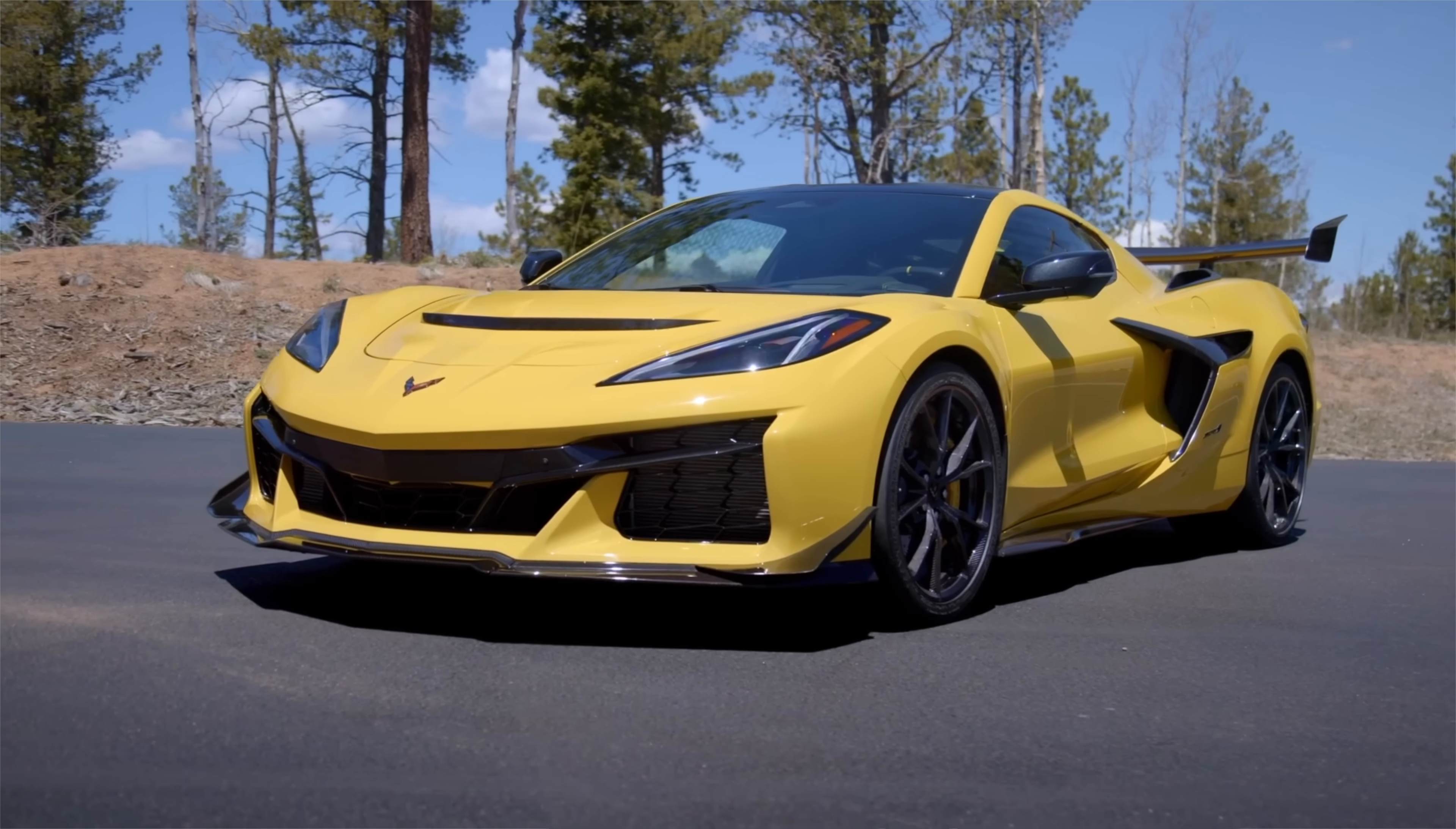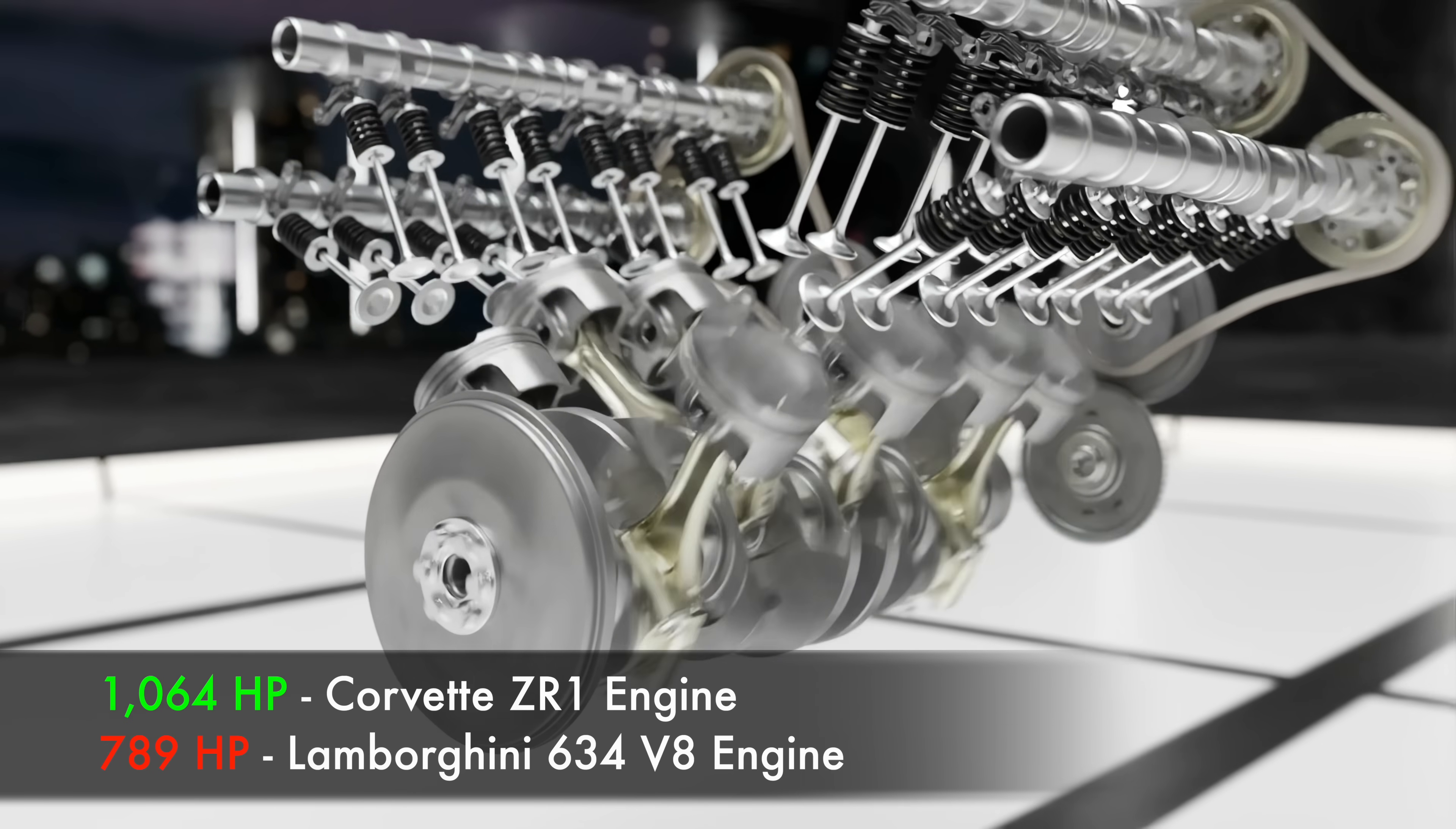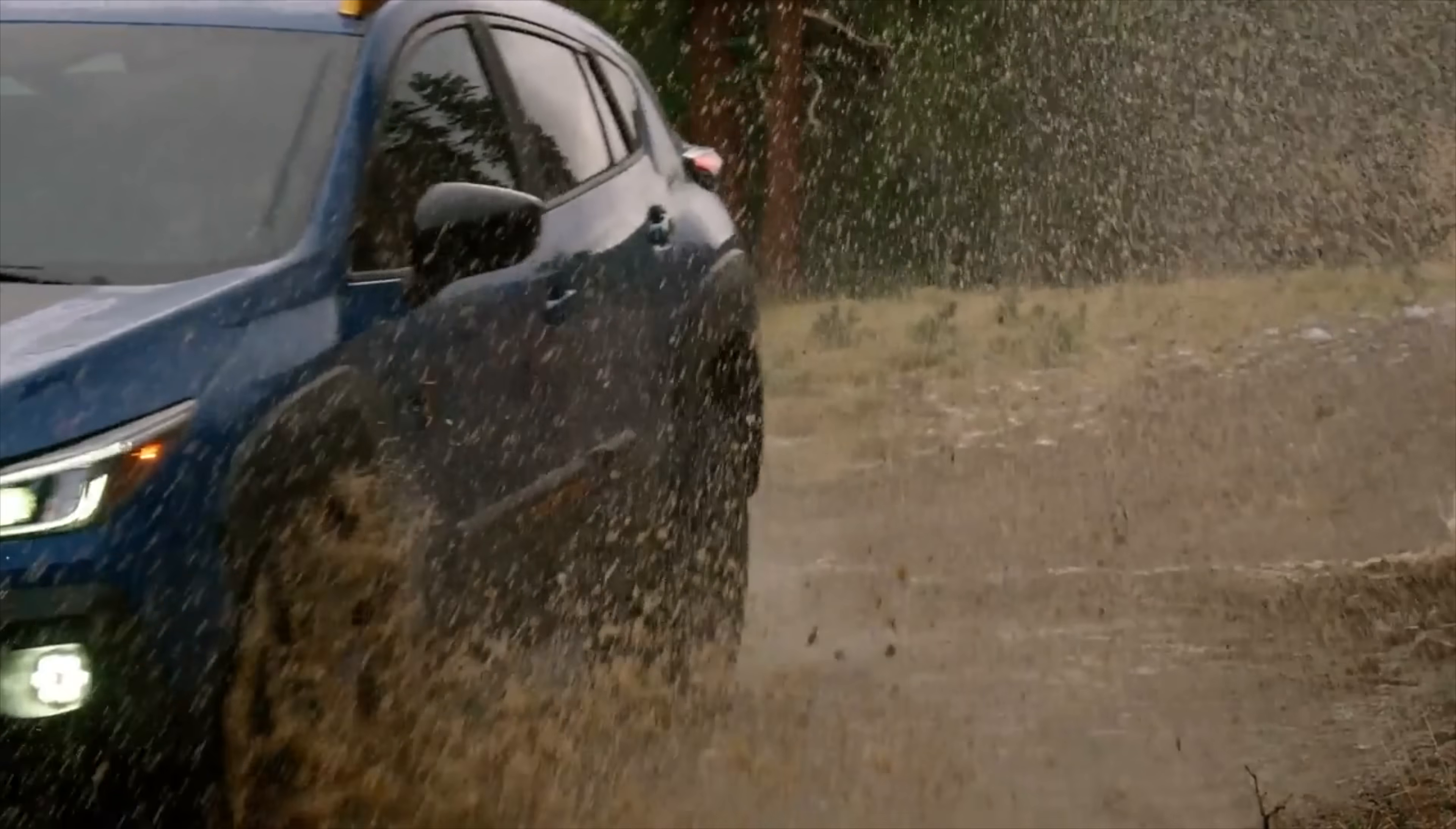The new Corvette ZR1 makes 1,064 horsepower. What the fuck? That's more power than Bugatti's new V16 engine. That's over 250 more horses than Lamborghini's new twin-turbo V8 engine. That's more than 1,064 Subaru Crosstreks combined based on what it feels like accelerating in a Subaru Crosstrek.